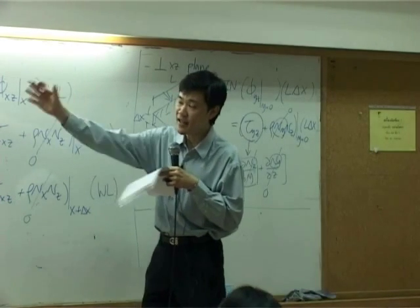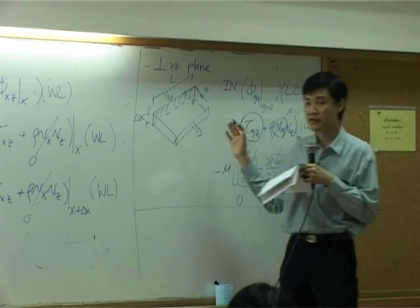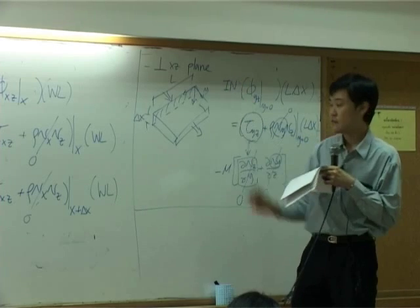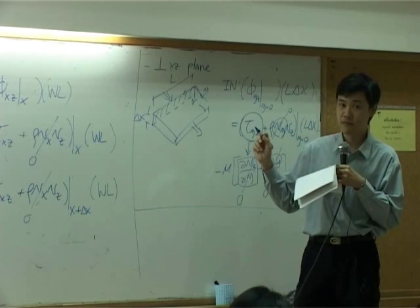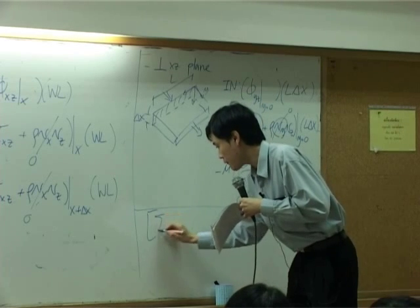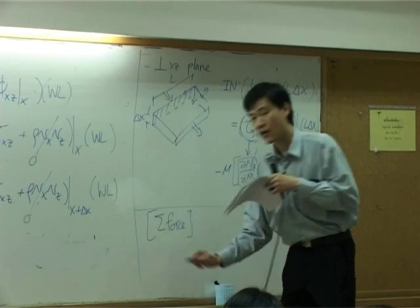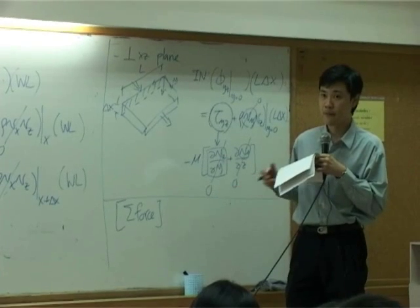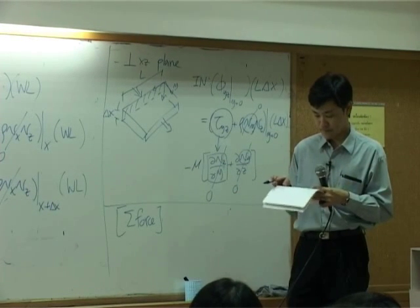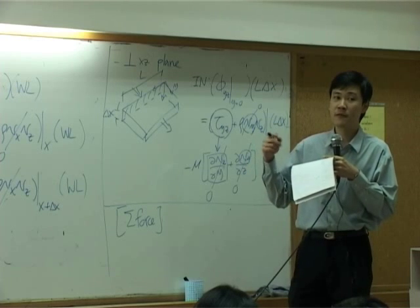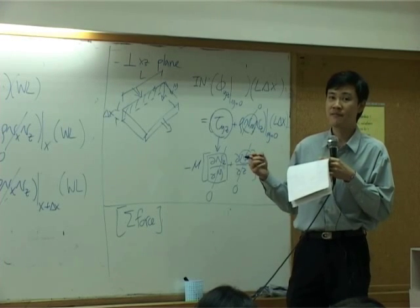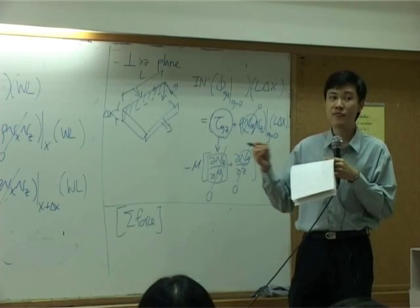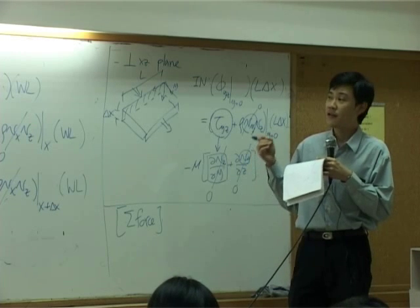So we consider in and out for all three pairs, for all three directions. The rest of the term in the balance are forces. So the summation of the force that we usually consider in the balance is normally gravity force. And gravity force from your fundamental physics is weight. Gravity affects weight. And weight is equal to mg.